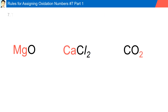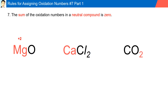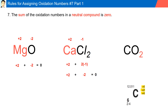Rule number seven: the sum of oxidation numbers in a neutral compound is zero. For example, magnesium has a plus two charge and oxygen has a minus two charge — adding them gives zero. In calcium chloride, calcium is plus two and chlorine is minus one; with two chlorines the net charge is zero. In carbon dioxide, oxygen is minus two and there are two oxygens giving a net charge of minus four, therefore carbon has an oxidation number of plus four.